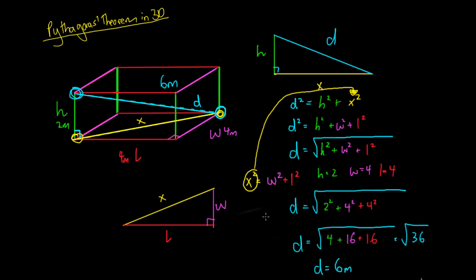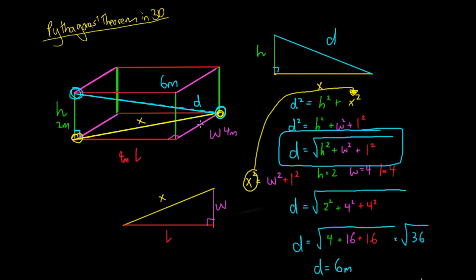All we did to work that out was use this formula: d equals the square root of the height squared plus the width squared plus the length squared. To find that side length, you just take the square root of each dimension squared and sum them. I hope that helps you understand Pythagoras Theorem in 3D — it's very logical. I'll put out some questions for you to have a go at, thanks guys.